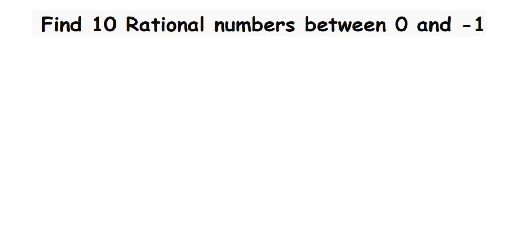Hey everyone, here is a question from rational numbers asked by Sumit. The question is: find 10 rational numbers between 0 and -1. We can write 0 and -1 in p by q form as 0/1 and -1/1.